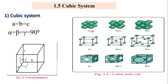In the cubic system, there are three types of unit cells: simple cubic or primitive cell, body centered cubic unit cell, and face centered cubic unit cell. In simple cubic, particles are present at the eight corners only. In body centered cubic, particles are present at eight corners and one particle is at the center of the cube. In face centered cubic, one particle is present at the center of each face.